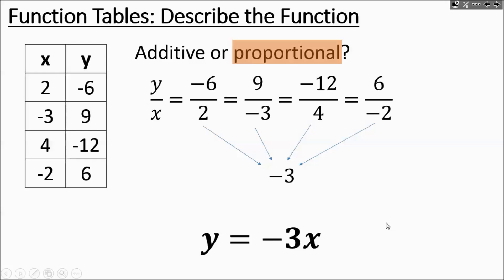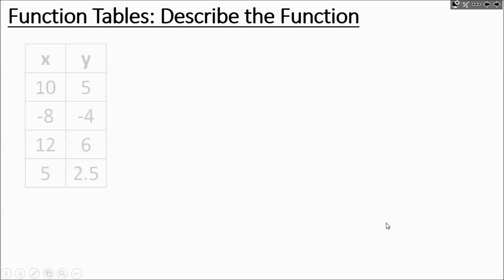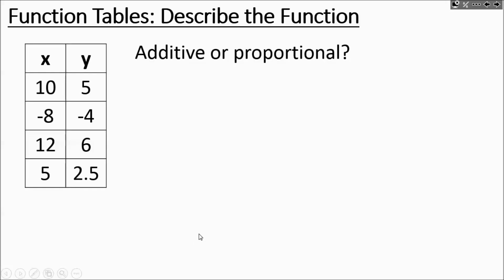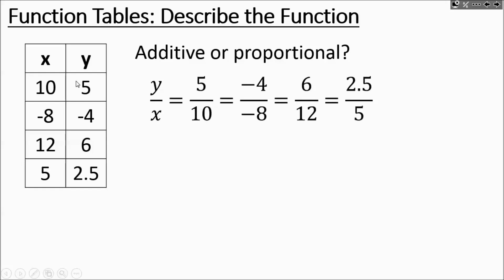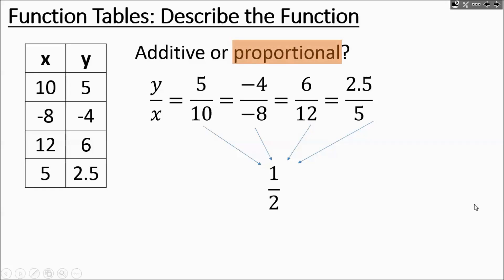One more table: is it additive or proportional? Let's try y minus x: 5 minus 10 is negative 5, and negative 4 minus negative 8 is not the same thing, so it's probably proportional. Let's check y over x: 5 over 10, negative 4 over negative 8, 6 over 12, and 2.5 over 5 — they all simplify to one-half. So this is a proportional relationship where we're multiplying every x value by one-half. The rule is y equals one-half times x.